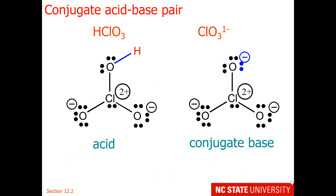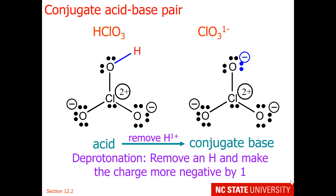Here is another example of a conjugate acid-base pair: HClO₃ and the chlorate ion. You notice once again the hydrogen is bonded to the oxygen, and if we remove an H⁺ — we call this deprotonation — we remove a hydrogen and make the charge more negative by 1. You notice the hydrogen has been removed and instead of 0, we have a minus 1.